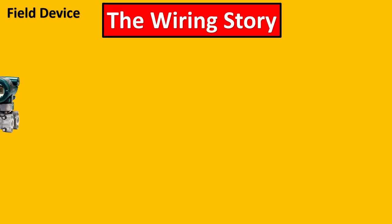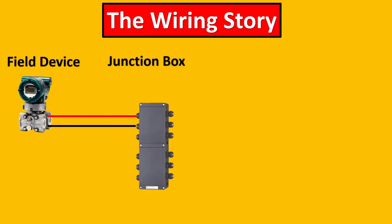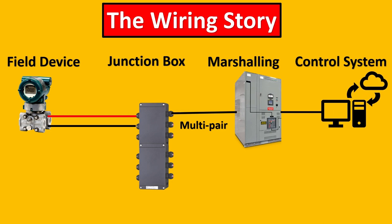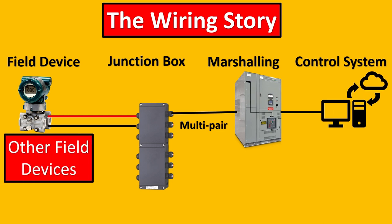Here's the wiring story. Imagine here's your field device which gets connected to your junction box. From junction box, a multi-pair cable is going to go to your marshalling cabinet. From marshalling cabinet it will go to your IO cards in the control system. It's a very simple story which happens for all other field devices.